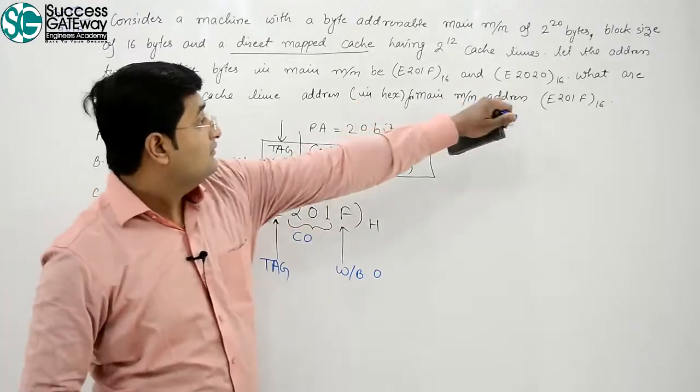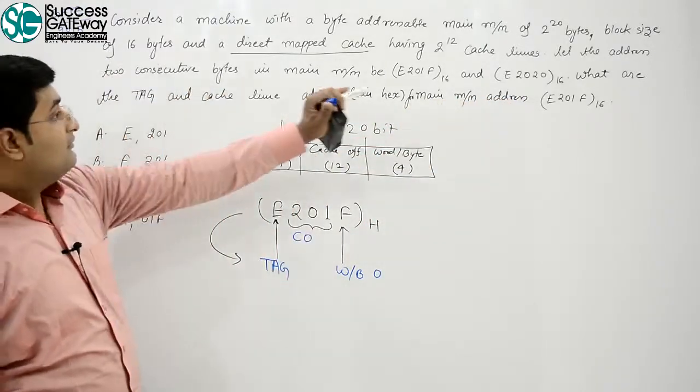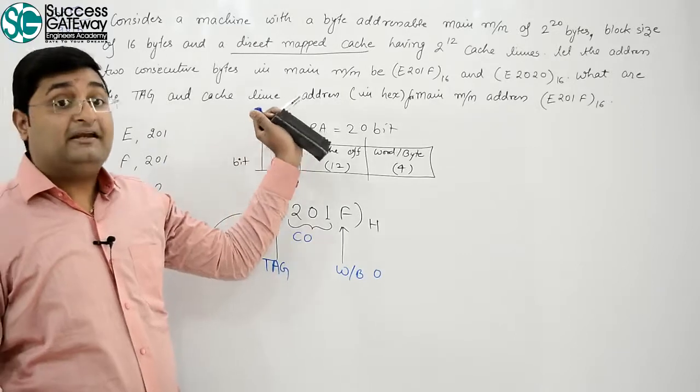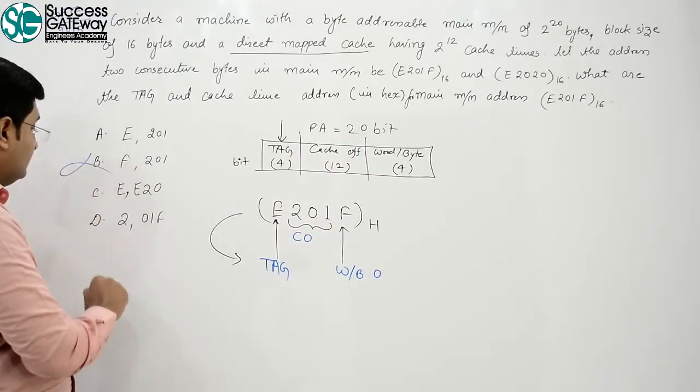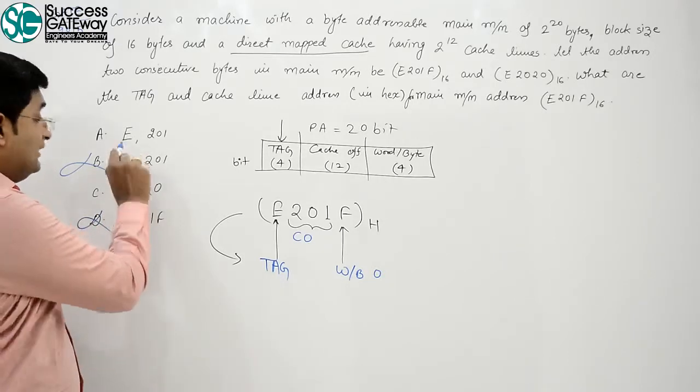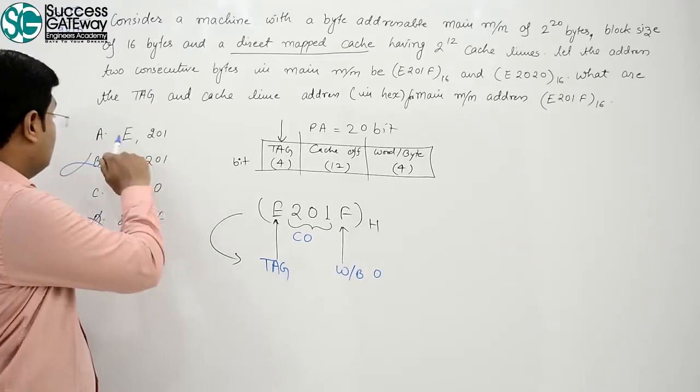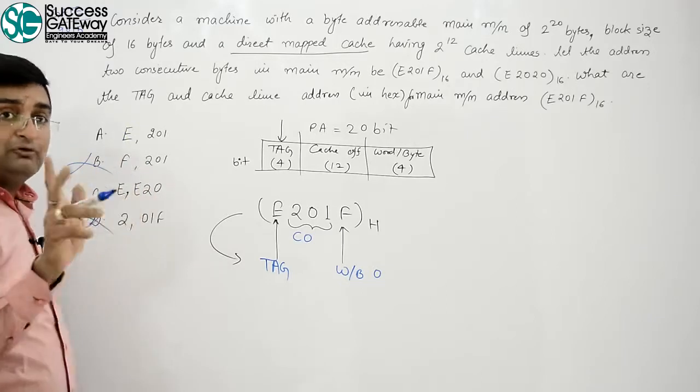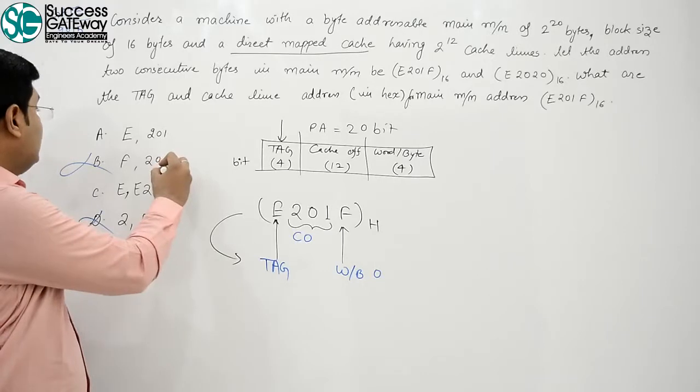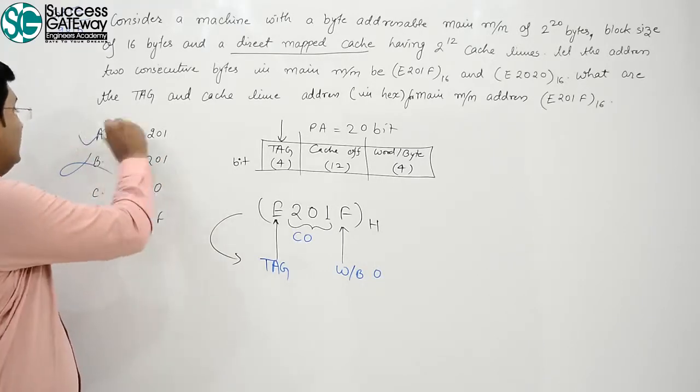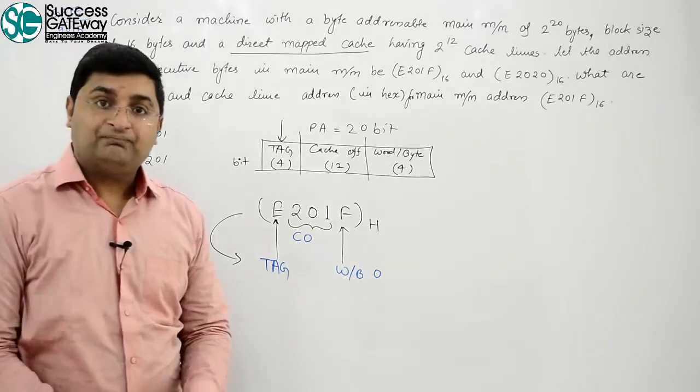What is the question? What are the tag and cache line address? What is the tag? E. F gaya, D gaya, E. Okay, we are... Now, there are two options, A and C. What is cache offset? That is 201. That's why answer is A.